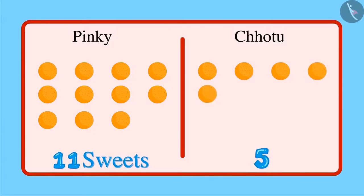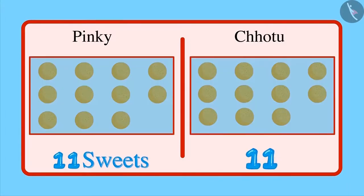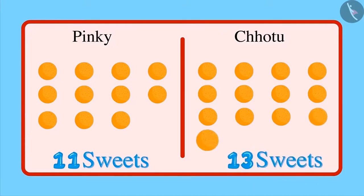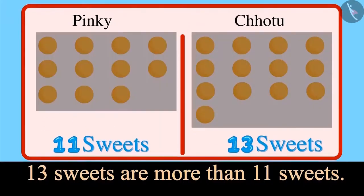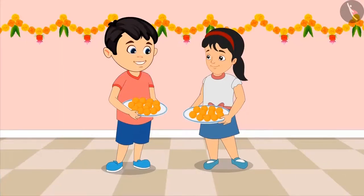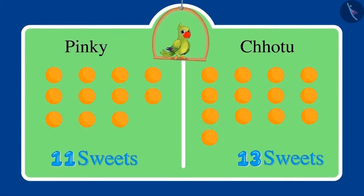Okay Chotu, now you count the number of sweets in your plate. 1, 2, 3, 4, 5, 6, 7, 8, 9, 10 and 11 — that's equal to the number of sweets in your plate. But there are more: 12 and 13 sweets. That means 13 sweets are more than 11 sweets, so you have more sweets in your plate.